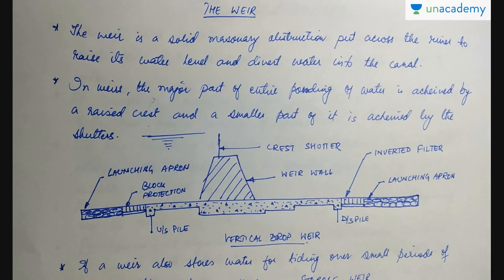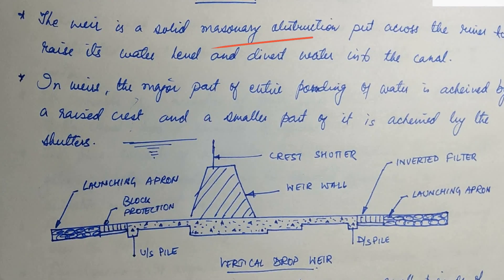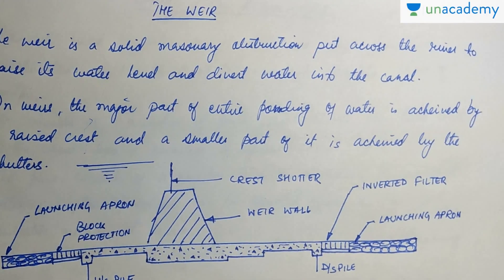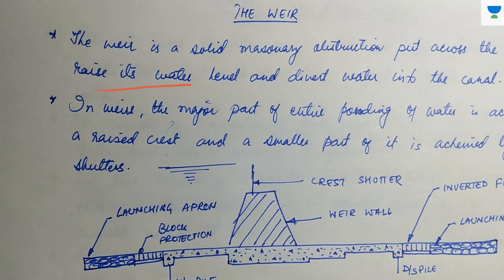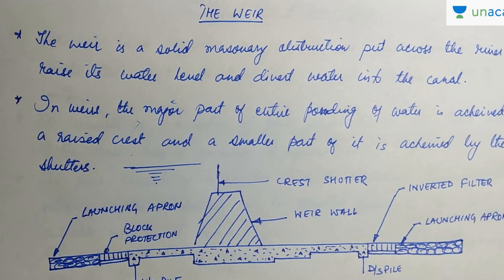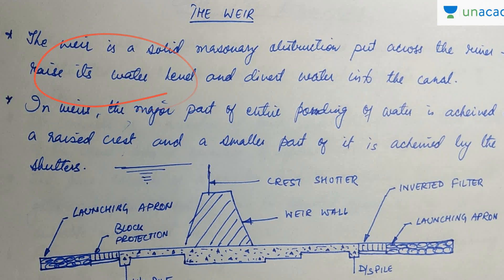A weir is a solid masonry obstruction put across the river to raise the water level and divert water into the canal. It's just an obstruction in your riverbed. What does a weir actually want? We want to raise the water level, and the second purpose is to divert the water into the canal.